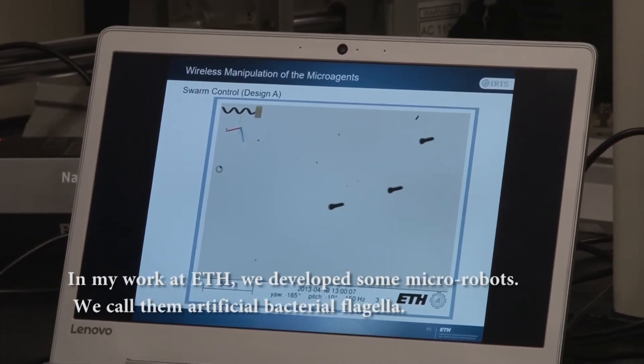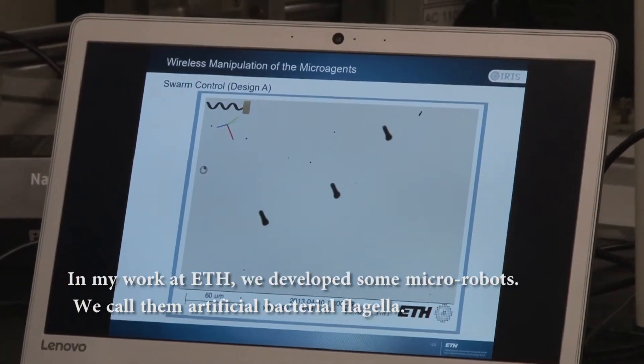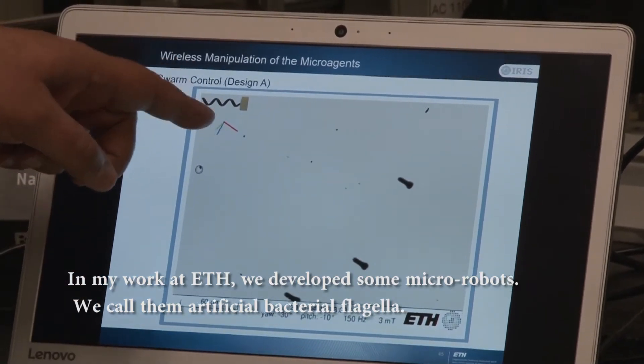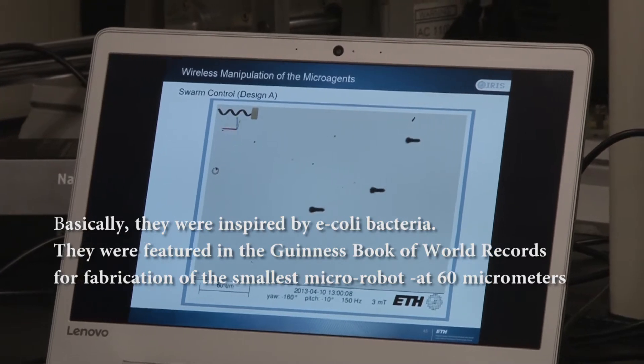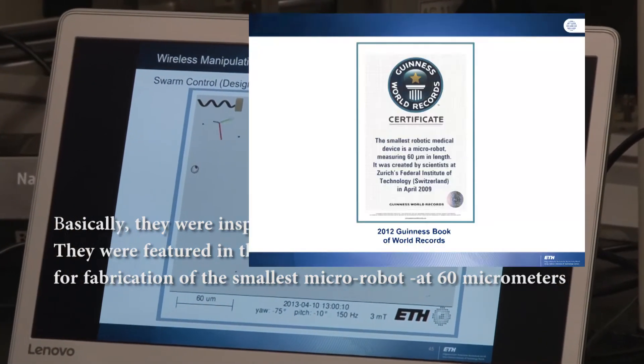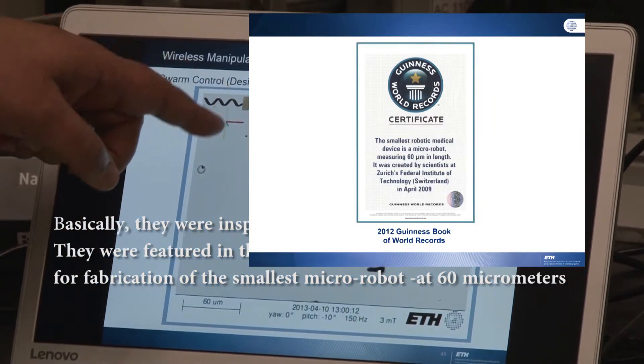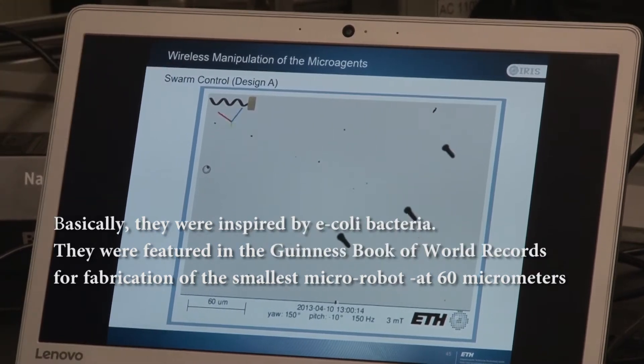During my work at ETH, we developed some micro robots, or we call them artificial bacteria flagella. Basically, they were inspired and mimicked by the E. coli bacteria. We were also featured in the Guinness Book of World Records for fabricating the smallest micro robots at a size scale of 60 micrometers.